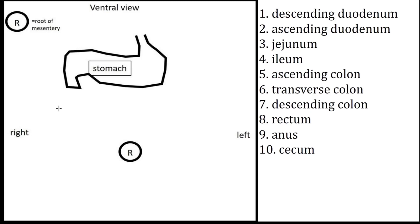Hey everybody. Today we're drawing the small and large intestines in the dog and we're just going to do a quick sketch to determine their general location in the abdomen. Remember this is their common general location, but the abdominal organs always move and can be found in different places. So to begin with we're going to orientate ourselves.